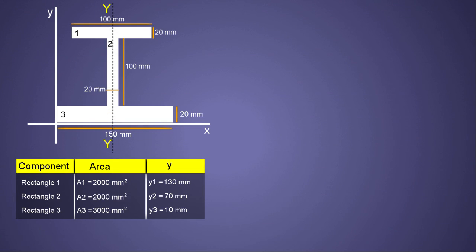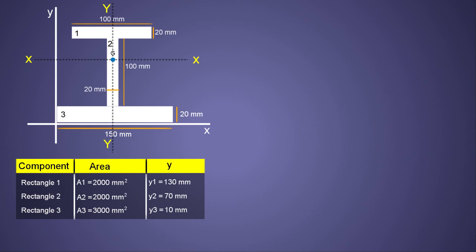In step six, we mark the centroid G on the given figure as close to the calculated values as possible. That's the solution for problem 2 — centroid of an I-section. Understand the logic behind each step and follow this step-by-step method, which makes problem solving very easy. In the next video we will solve another interesting problem.